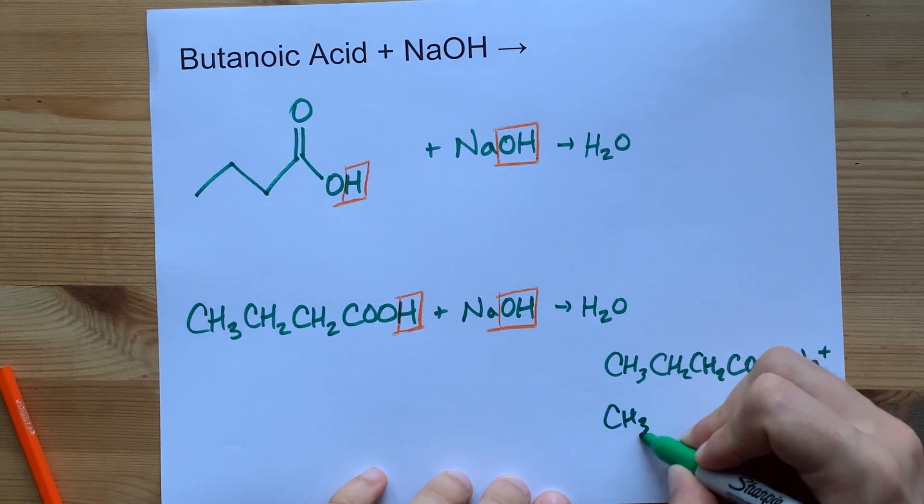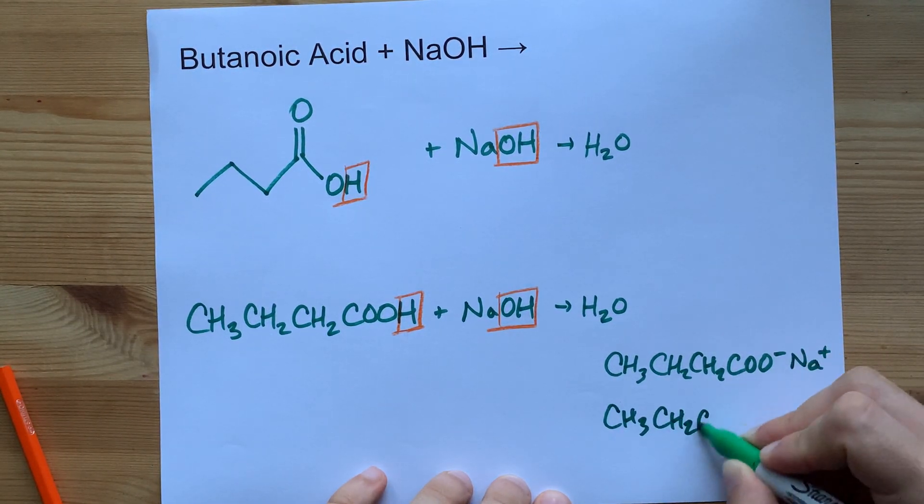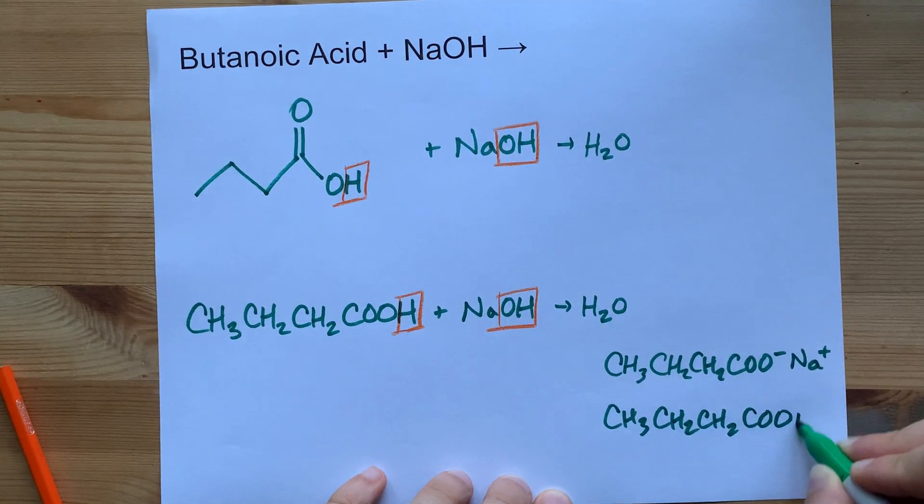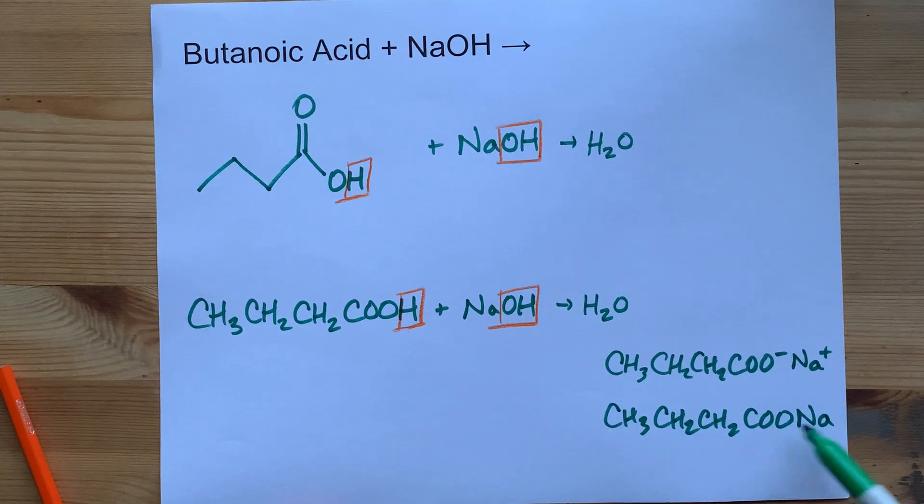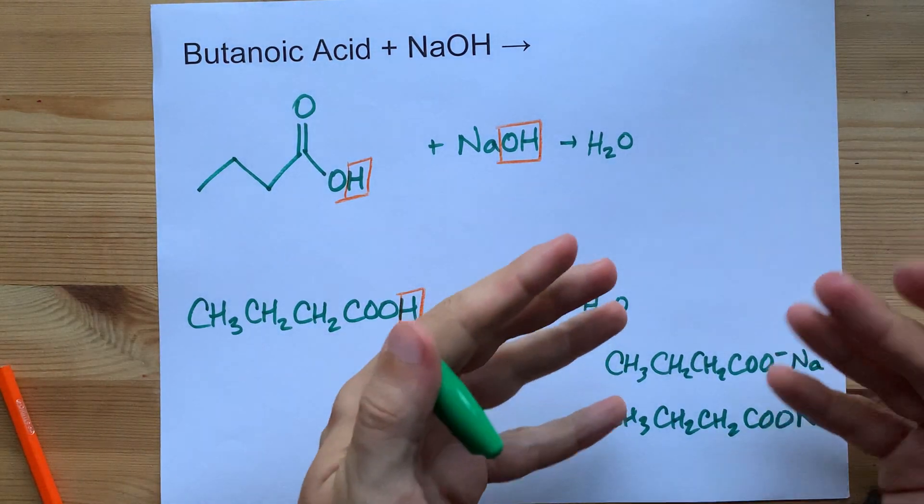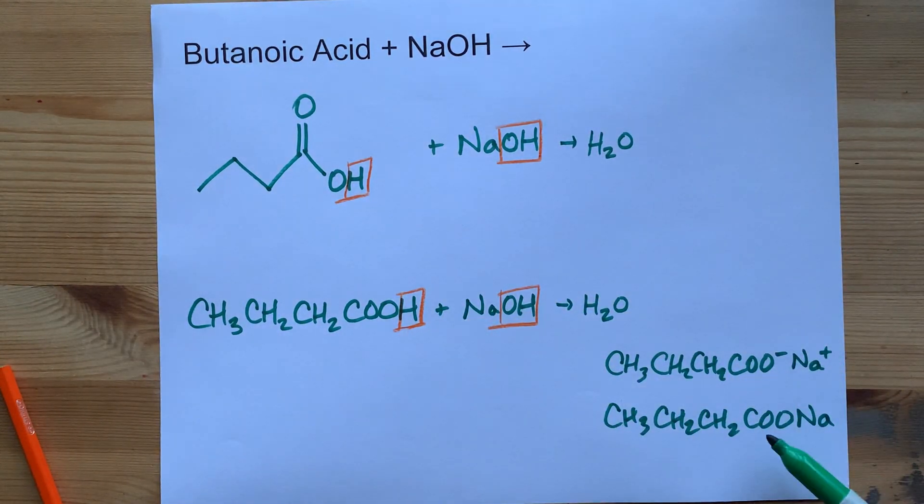You can often get away with writing it with the O and Na rammed together, but everyone knows that that's just a counter ion situation. They're not actually bonded to each other. There's an ionic lattice if it's a solid, but whatever.